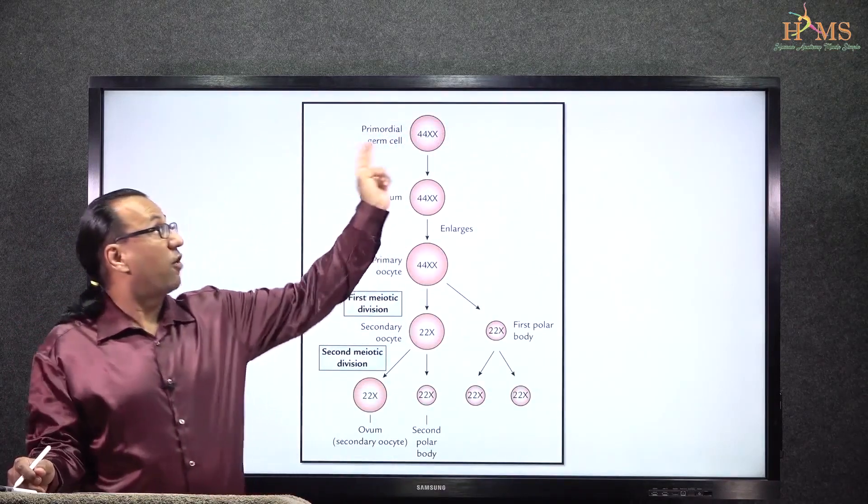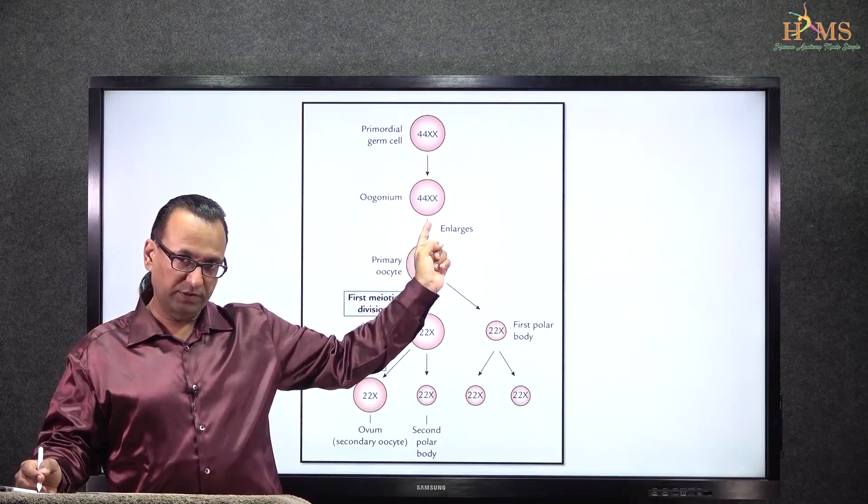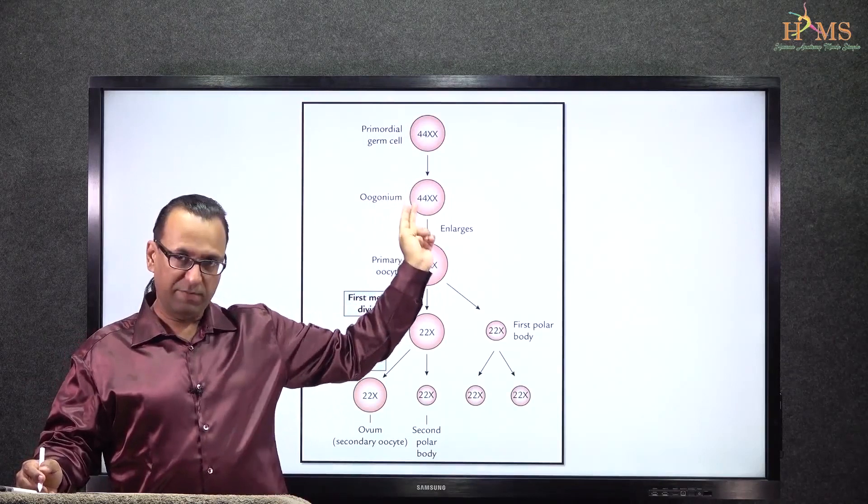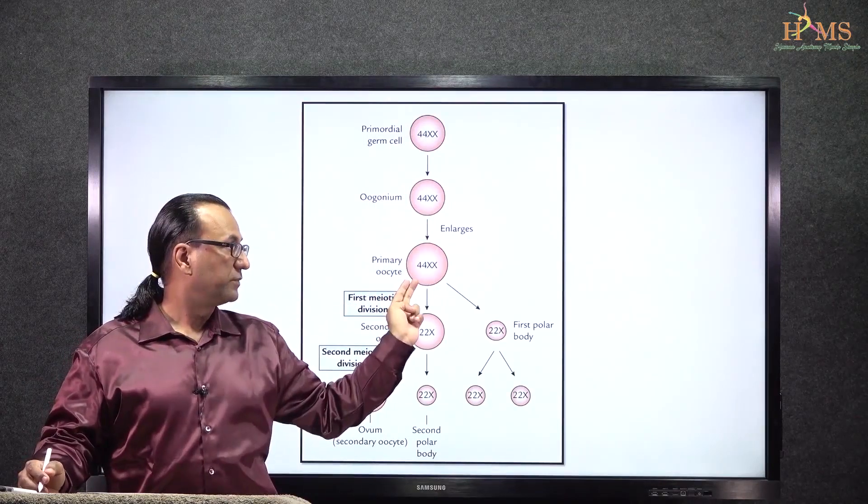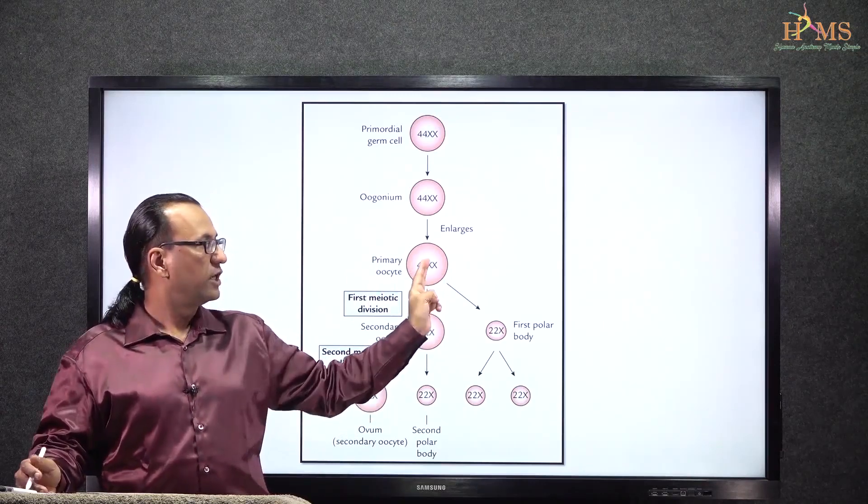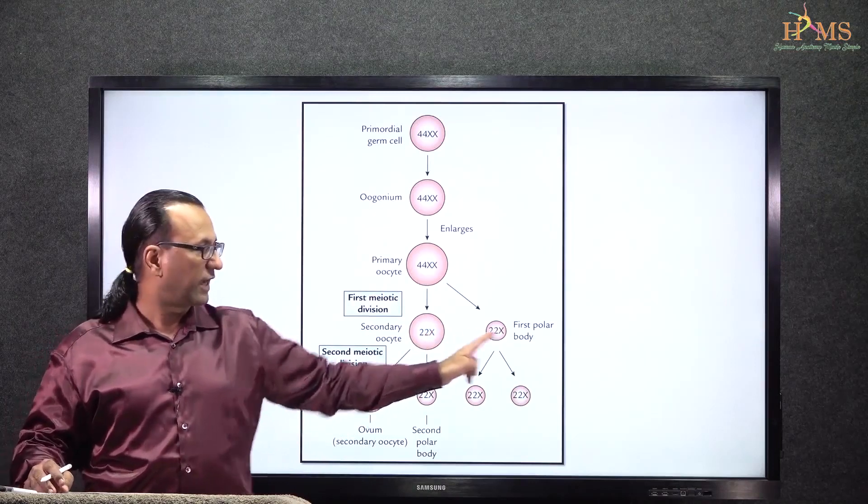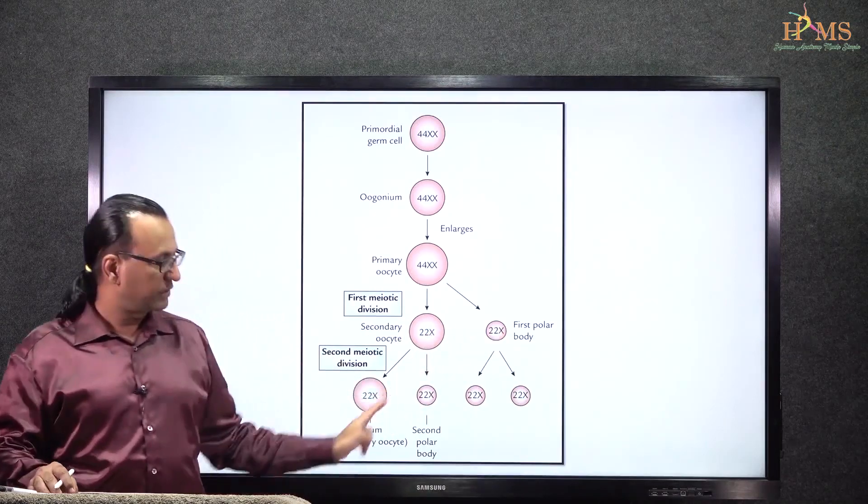In the beginning, there will be a primordial germ cell for male and female alike, and that will undergo mitosis to give gametogonia. Then gametogonia will give us gametocyte—this primary gametocyte, which could be primary oocyte or primary spermatocyte, will then undergo meiosis one, and then the secondary gametocyte will undergo meiosis two.